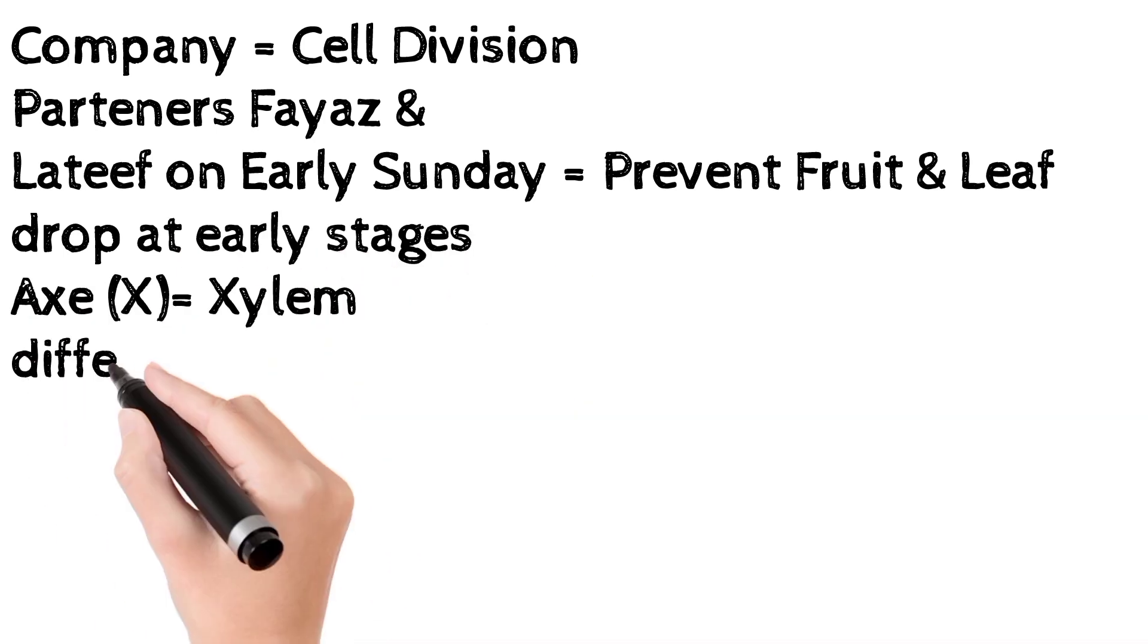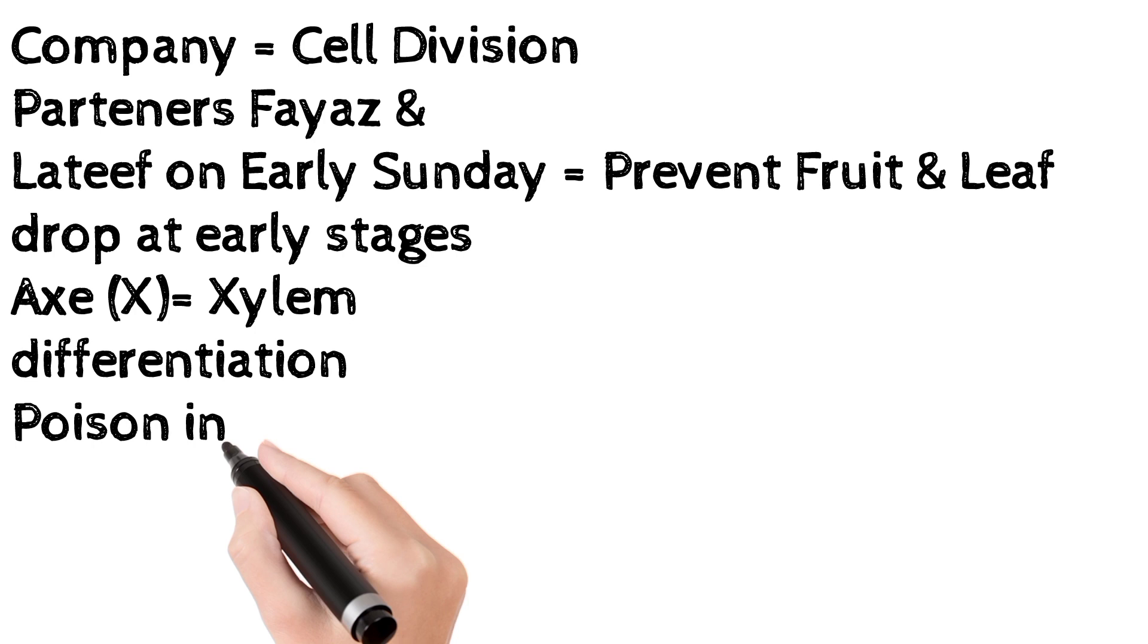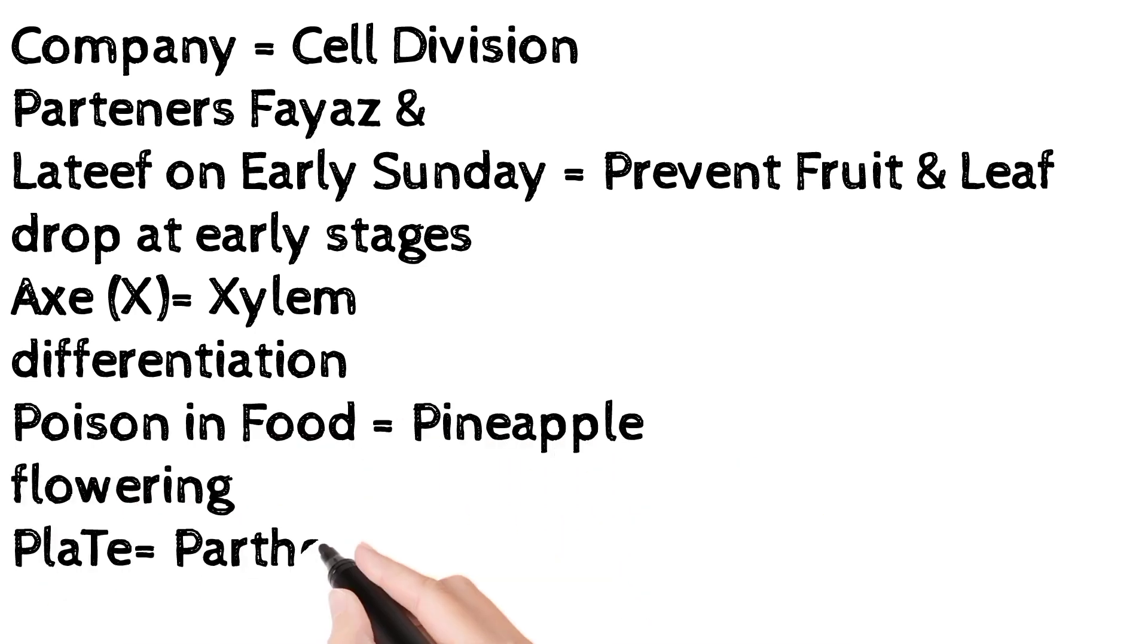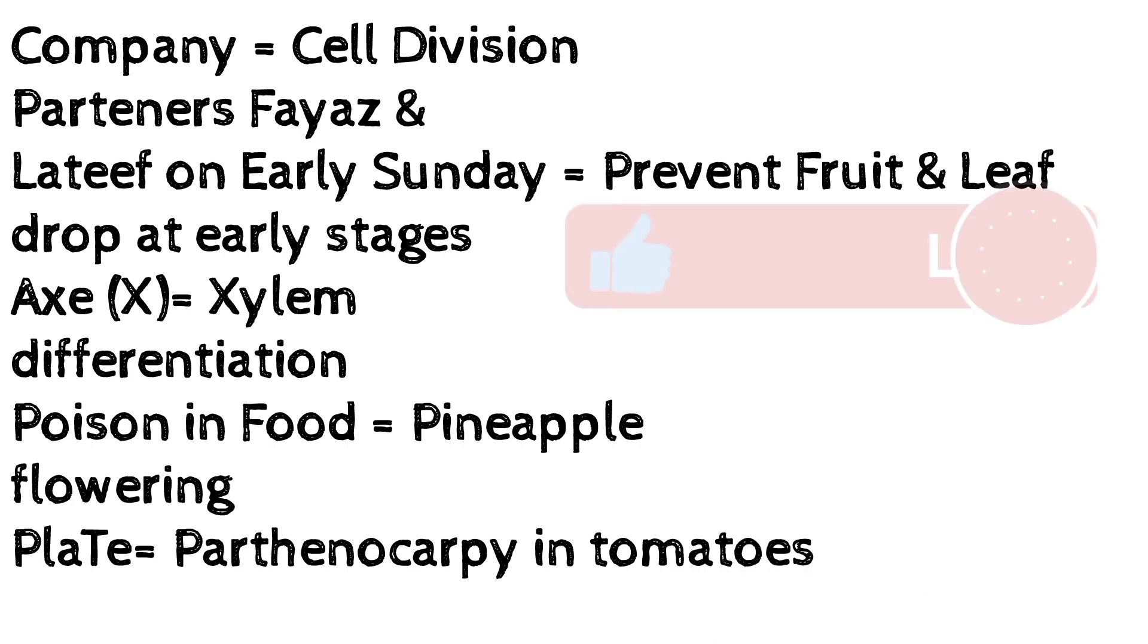X you have to remember alphabet X, that denotes xylem differentiation. Poison in Food denotes pineapple flowering. And Plate you have to remember P and T, that denotes parthenocarpy in tomatoes.